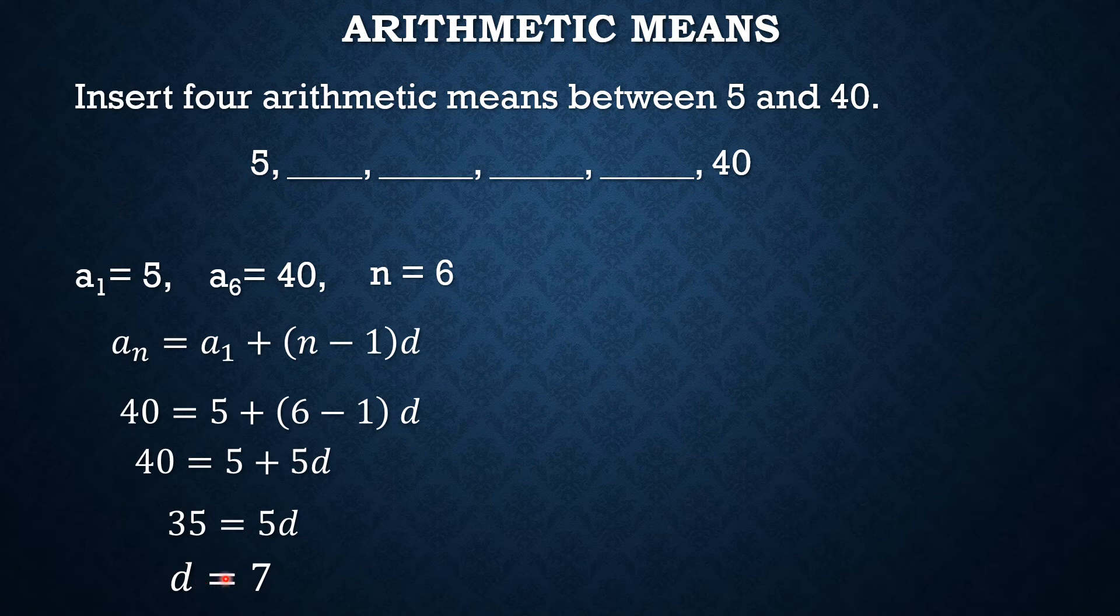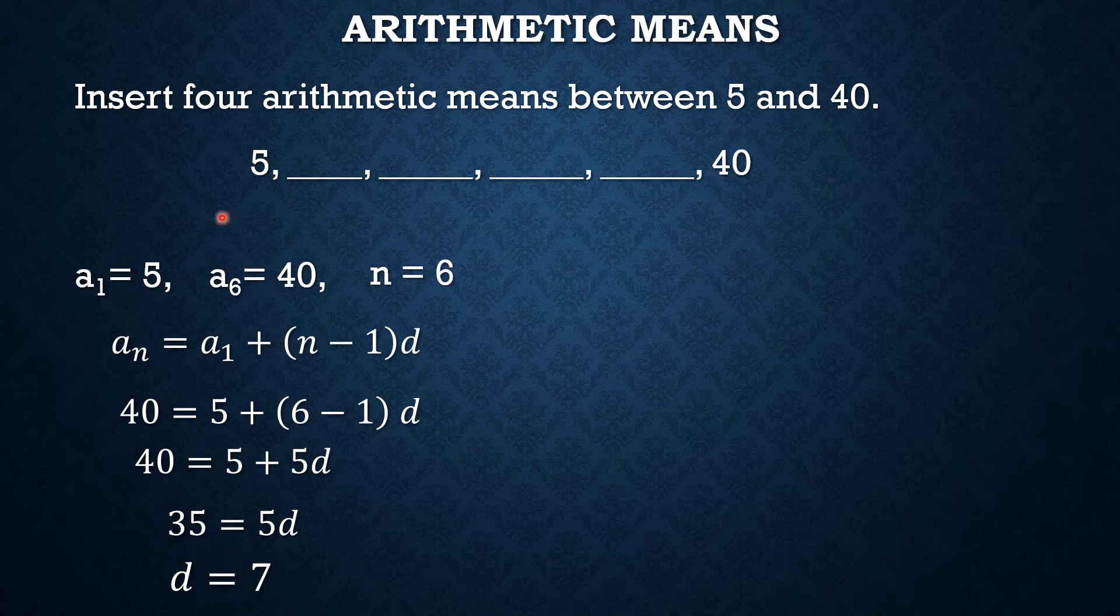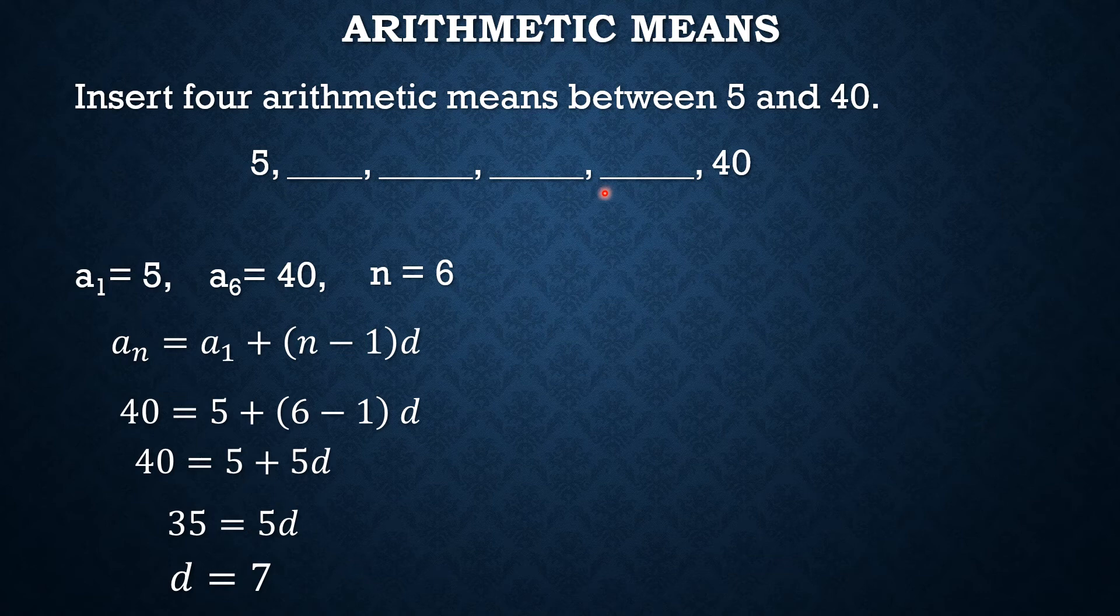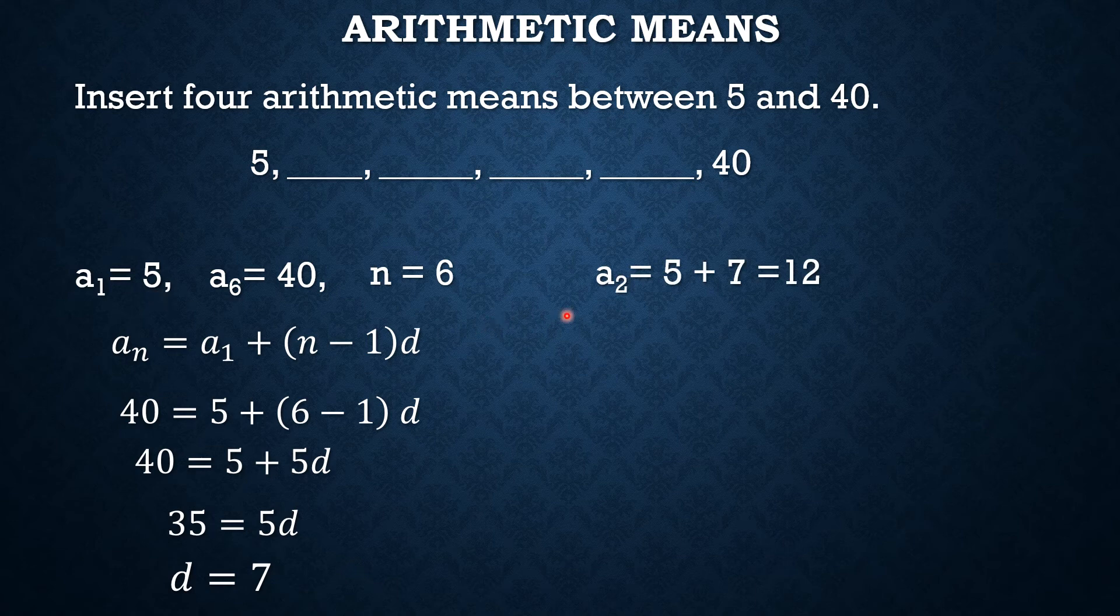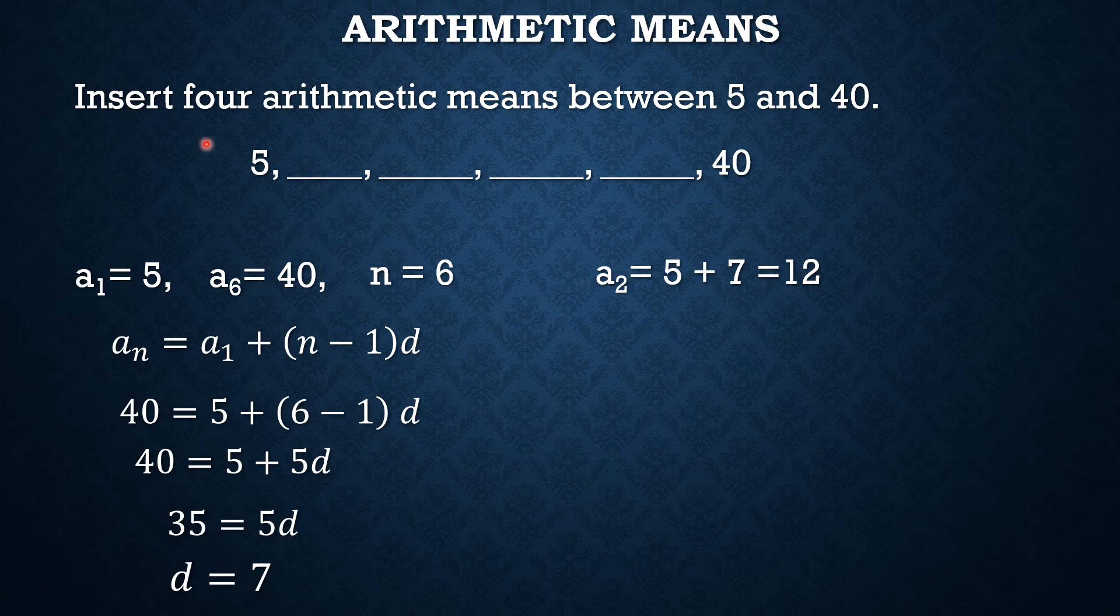Now that we know the common difference, we simply have to add the common difference to our terms. For example, to find the second term of the arithmetic sequence, we just need to add the common difference 7 to the first term, 5. So in that case, a sub 2 is equal to 5, the first term, plus the common difference 7 and that gives us 12.